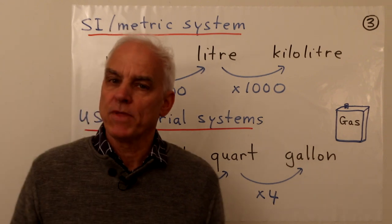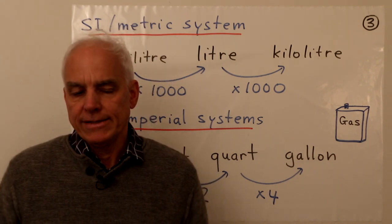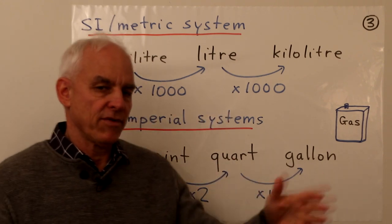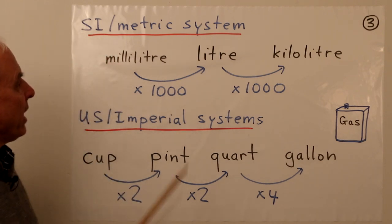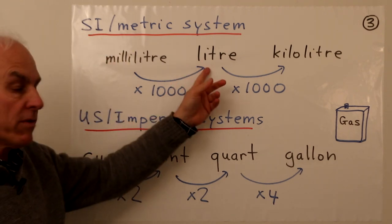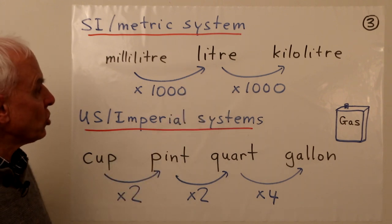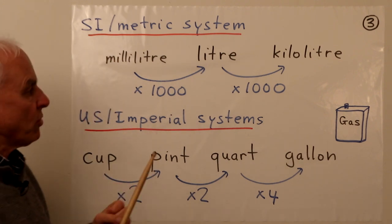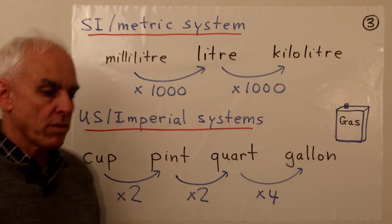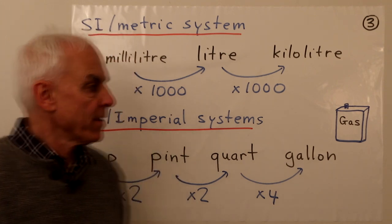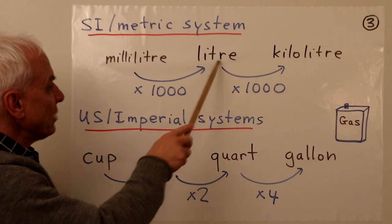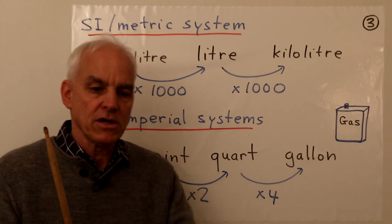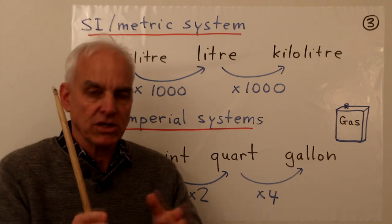The modern system for measuring capacity or volume is a little complicated, so here is a bird's-eye view. In the SI or metric system, the basic unit is the liter. A thousand liters is a kiloliter, and a subunit of a liter is a milliliter — one thousandth of a liter. So a thousand milliliters is a liter, and a thousand liters is a kiloliter. We again see the importance of the number thousand when going from one unit to another.